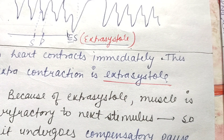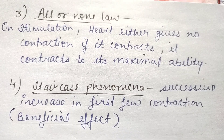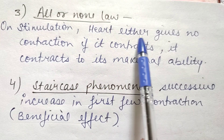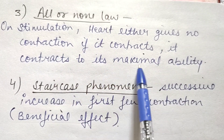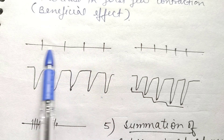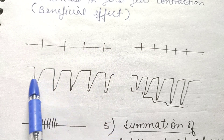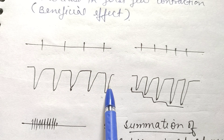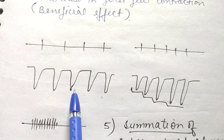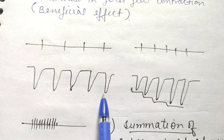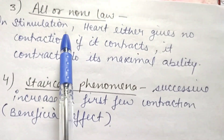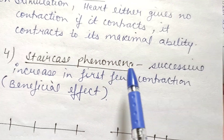Next is the all-or-none law in cardiac muscle. On stimulation, the heart either gives no contraction, or if it contracts, it contracts to its maximum ability. Looking at the graph, with every stimulus there is a contraction of the same amplitude. So on stimulation, either the heart gives no response or responds to its maximum — all amplitudes are the same, the muscle is fully contracting. This is the all-or-none law.